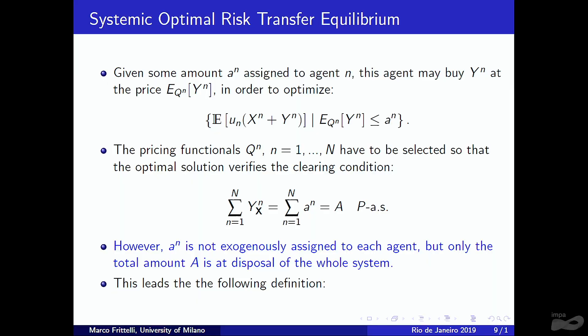Suppose aₙ is assigned. As in the Bühlmann approach, Yₙ optimizes the single agent's expected utility under a given budget constraint. But now, each agent has their own pricing probability Qₙ — not one single Q. These pricing functions must be selected so that each agent's optimal solution also satisfies the clearing condition: the sum of Y components equals the constant A.